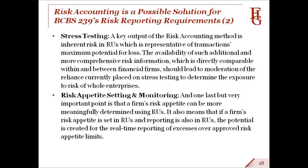Particularly significant here is the fact that through risk accounting, we can start with an understanding of an enterprise's inherent risk — that is, its maximum potential for loss. Risk appetite setting and monitoring: a firm's risk appetite can be more meaningfully determined using RUs. Given that the general ledger, management accounting, and risk accounting are all tied together and drawn from a common source of data, a firm's risk plan in RUs can be produced in exactly the same format as its financial plan, and together they comprise the firm's business plan. It also means that if a firm's risk appetite is set in RUs and reporting is also in RUs, the potential is created for real-time reporting of excesses over approved risk appetite limits.